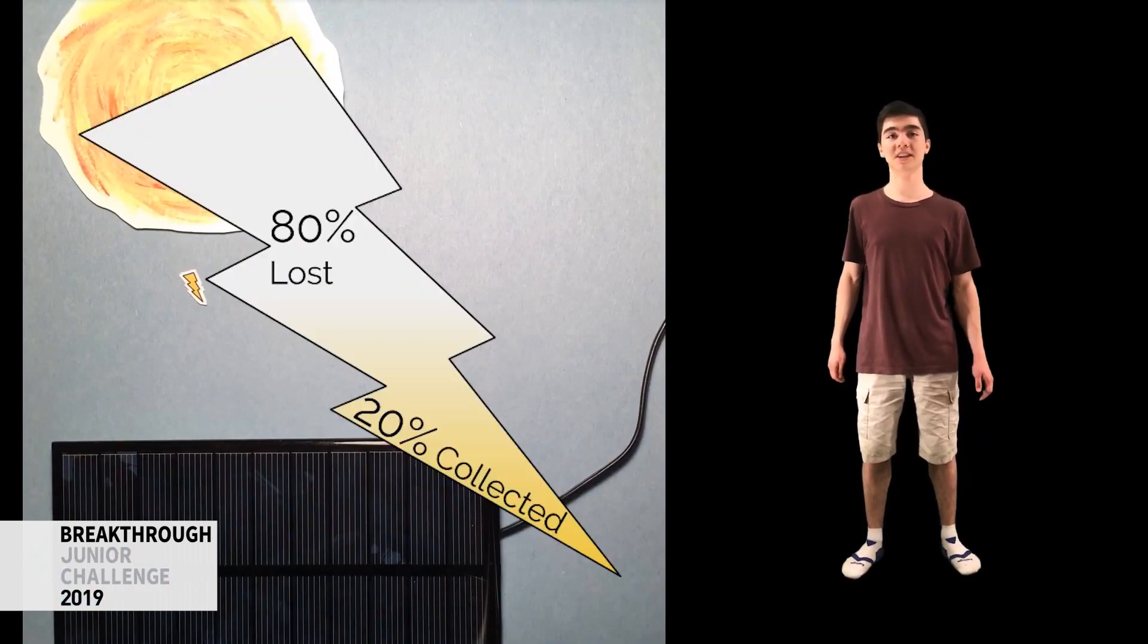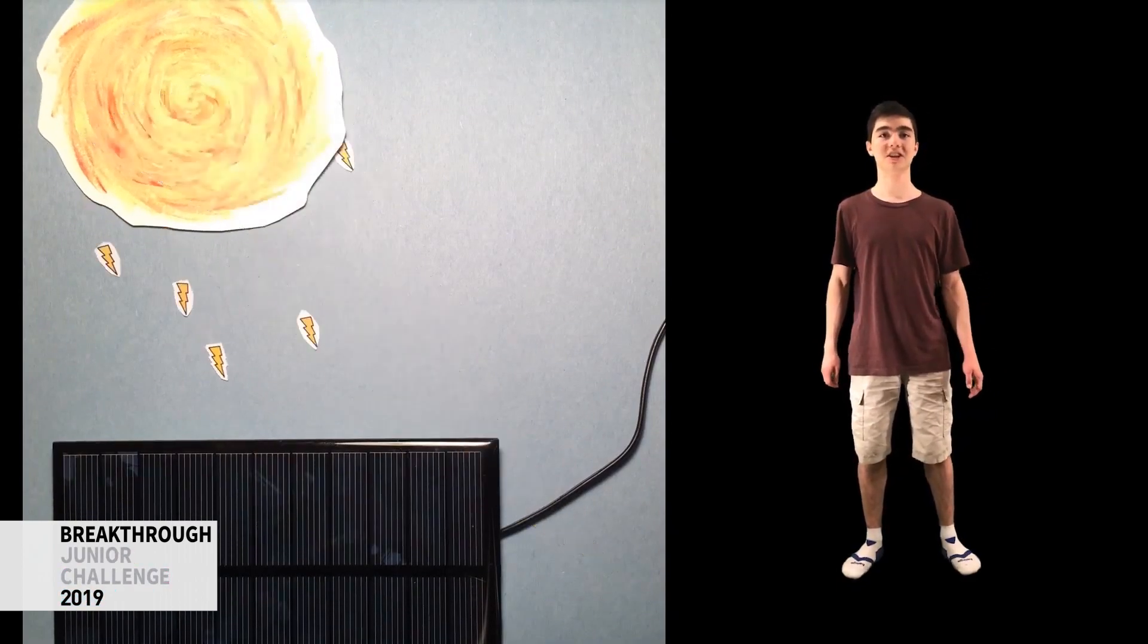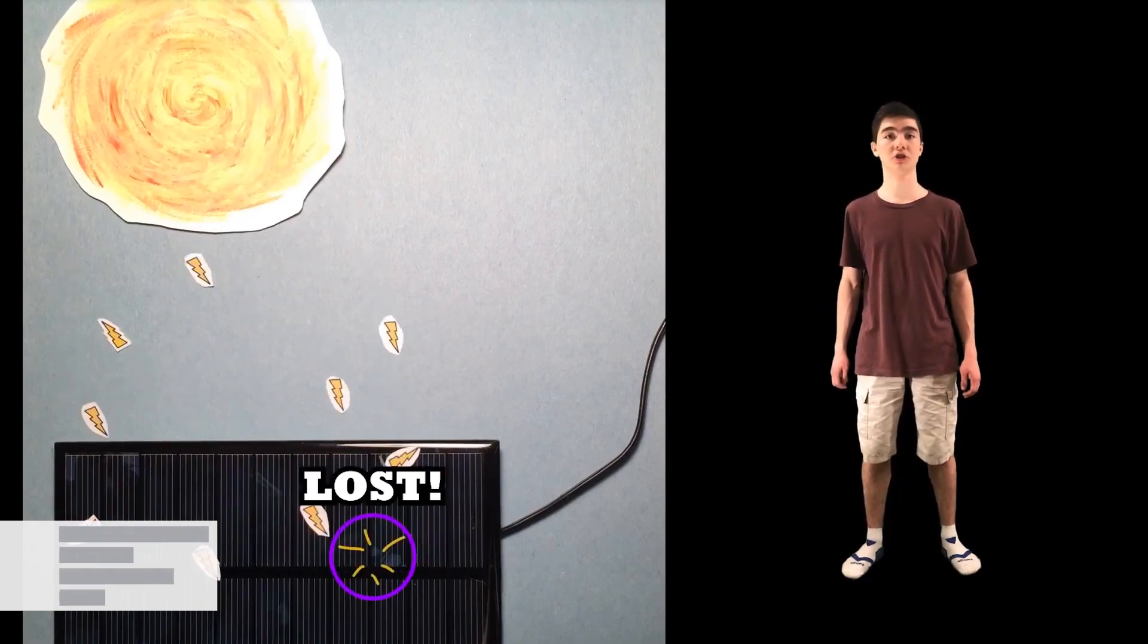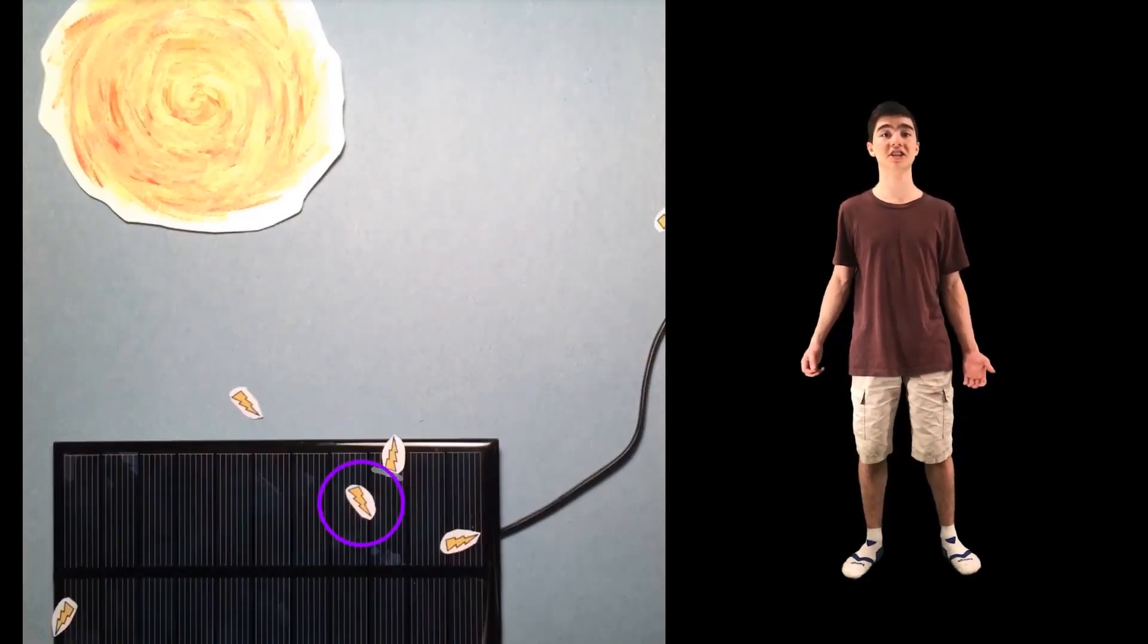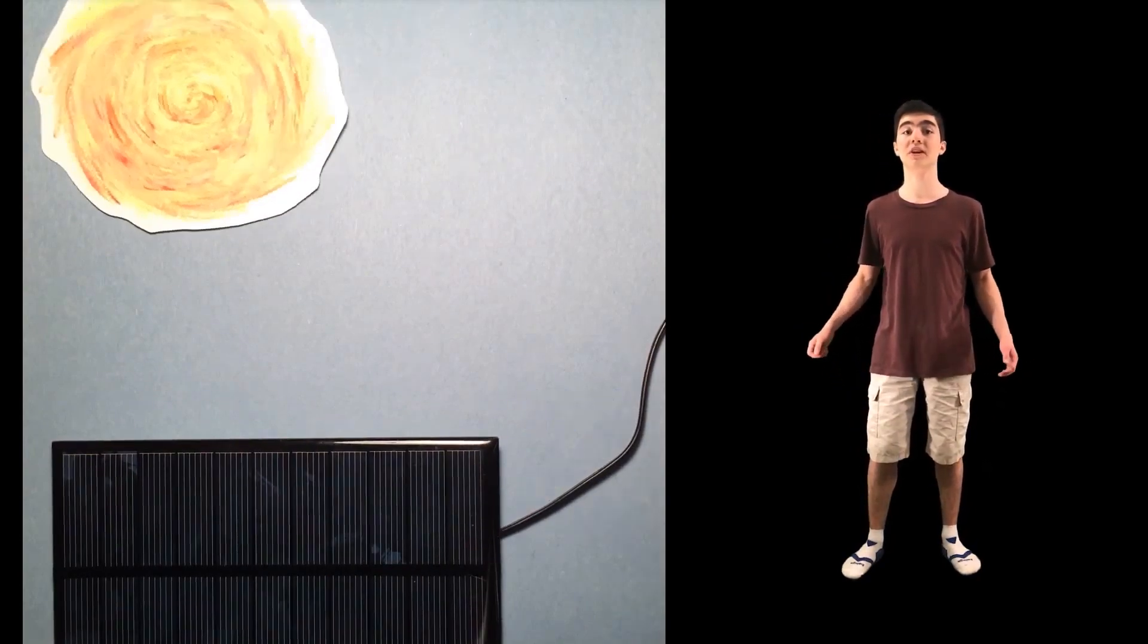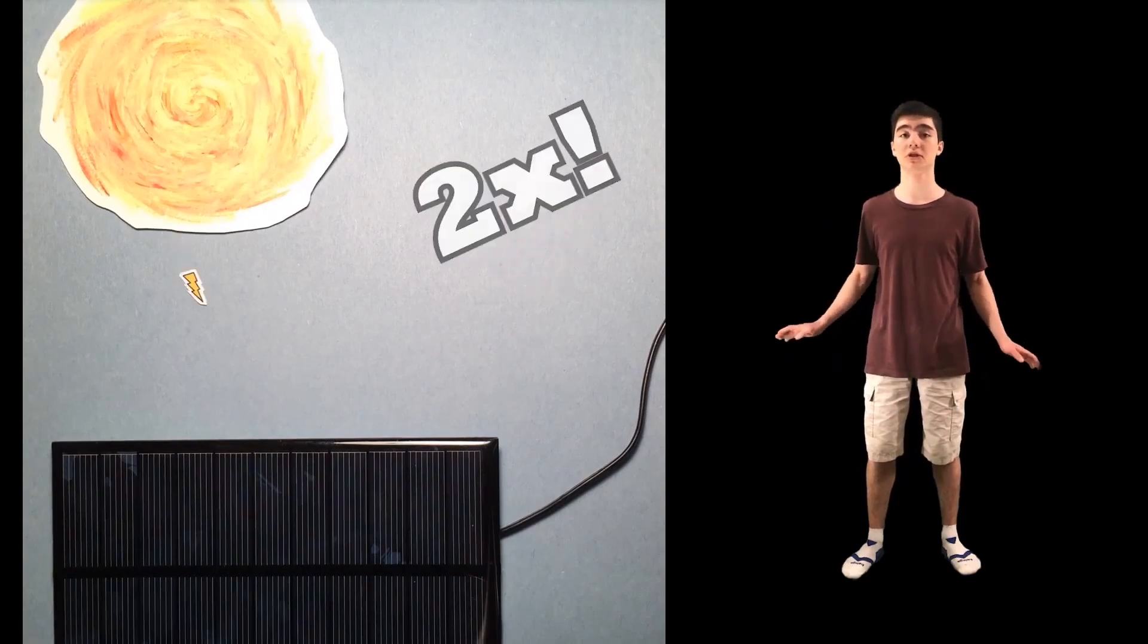A typical solar cell forfeits 80% of the energy available to it. Some of this loss occurs within the solar cell itself, where the energy was absorbed but lost during transport within the cell. More energy is lost from this cause alone than a typical solar cell produces in total. If we could fix this, we can more than double solar cell efficiency.